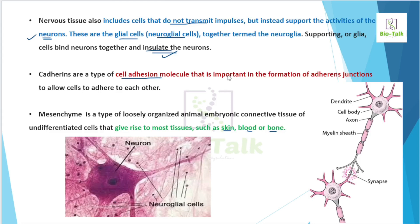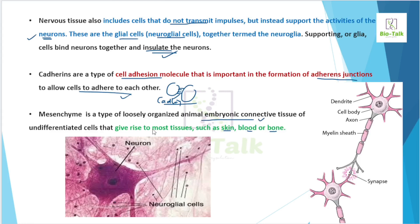A good type of cell adhesion molecule is important in the formation of connections in the nervous system. This relates to professional cell-to-cell attachment. The next concept is mesenchyme — mesenchyme is a type of loosely organized embryonic connective tissue, which differentially forms various tissue types.